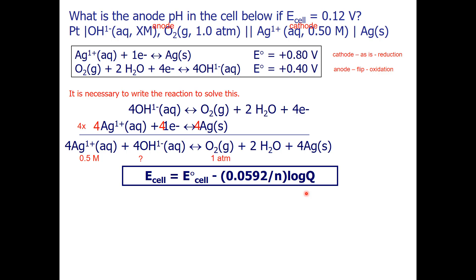Since we are at non-standard conditions, we need to use the Nernst equation, which is shown right here. I need to know the cell potential at non-standard state. The problem gives me that. It's 0.12 volts. I need to know the standard state cell potential.